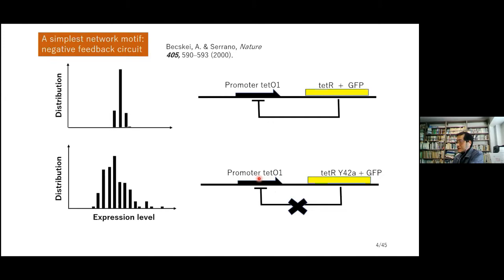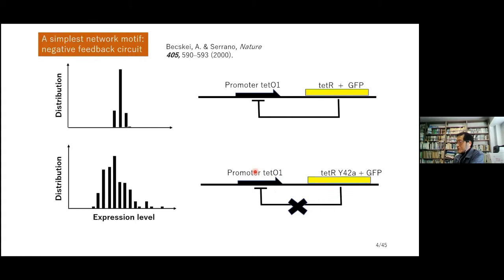Much attention has been focused on the role of noise or fluctuation in gene regulation. Here is a reported experiment where a gene and its promoter are arranged artificially in the plasmid DNA of a bacterium. The gene is fused with a GFP gene, so the level of expression of TetR protein can be monitored by fluorescence intensity of GFP. TetR binds on the TetO promoter to suppress expression of TetR itself — this is a negative feedback loop.